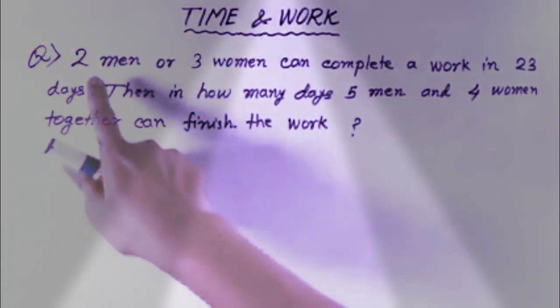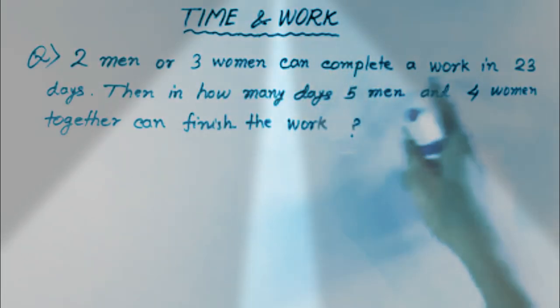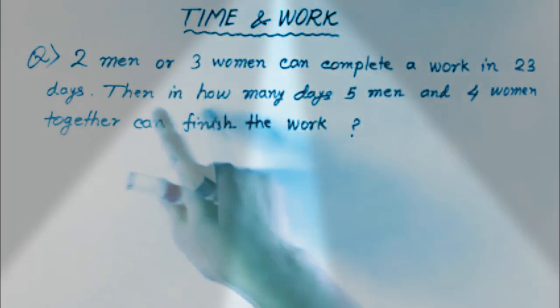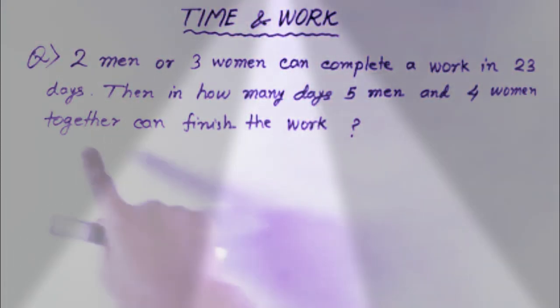Hi friends, in this video we will talk about time and work tricks. Two men or three women can complete a work in 23 days. Then in how many days can five men and four women together finish the same work?